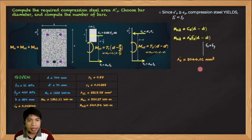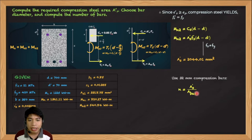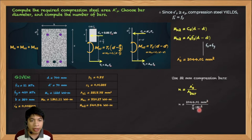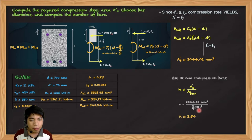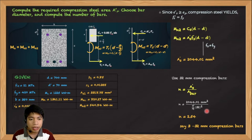Choosing 32 mm diameter compression bars, the number of bars = AS' / (π/4 × 32²) = 2,044.01 / 804.25 = 2.54. Since we round up in design, we need 3 — so use three 32 mm compression bars.